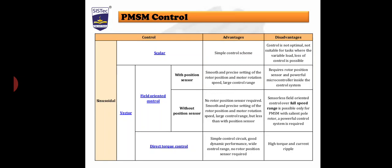Moving on to the second technique: vector control, specifically field oriented control with position sensor. The advantages are smooth and precise settings of the rotor position and motor rotating speed, and a large control range. The drawbacks are that it requires a rotor position sensor and a powerful microcontroller inside the control system, making it costly.